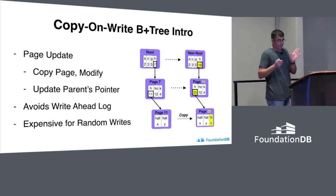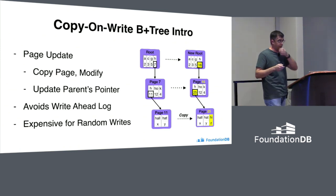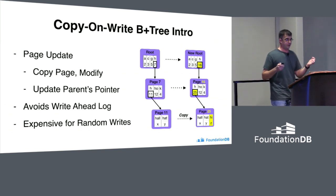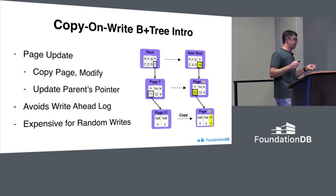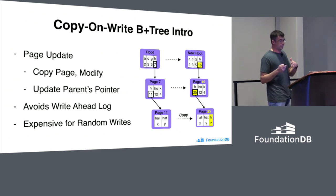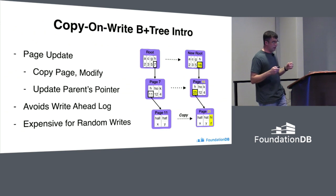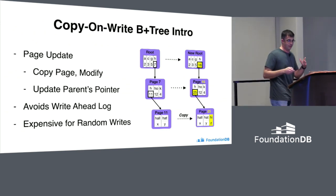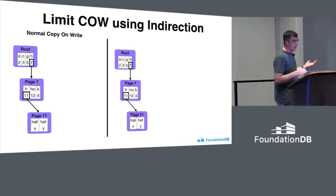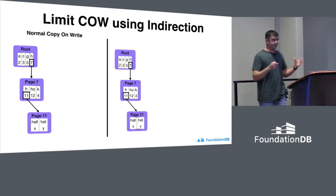This is expensive for random writes. If you have a branching factor of 200-to-1 and four levels in your tree, touching 200 random leaf pages means you're likely going to have to touch 200 random parent-of-leaf pages to update those pointers, because your third level is also larger than 200 pages. You get a lot of write amplification basically. We can limit this copy-on-write cost using indirection.